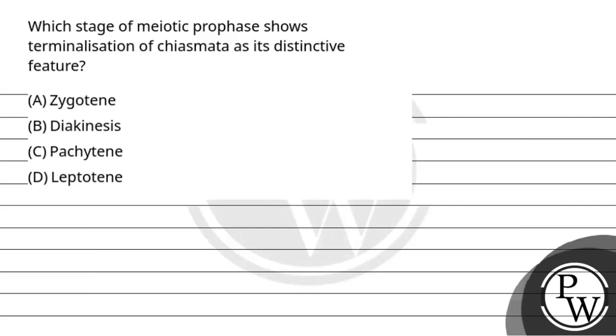Hello, so let's read the question. The question says, which stage of meiotic prophase shows the terminalization of chiasmata as its distinctive feature?